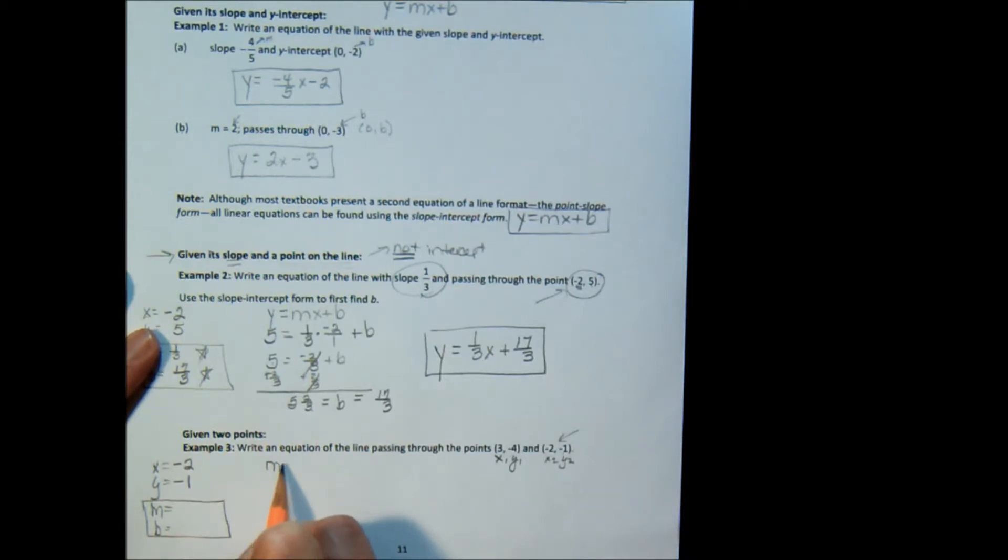So let's first find the slope. m equals y2 minus y1, watch your signs, over x2 minus x1. Or slope equals negative 1 plus 4 is 3. Negative 2 minus 3 is negative 5. So my slope is negative 3 fifths. And now we're back to one just like example 2, where I have to use the x, the y, and the m to solve for the b.